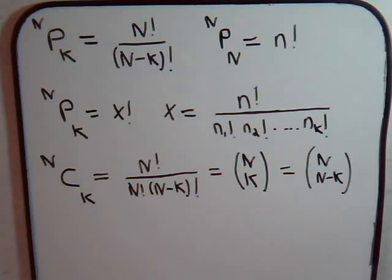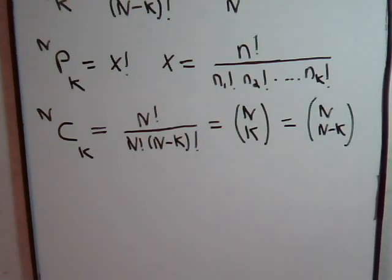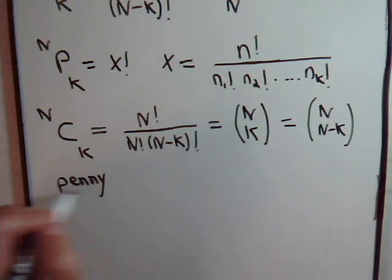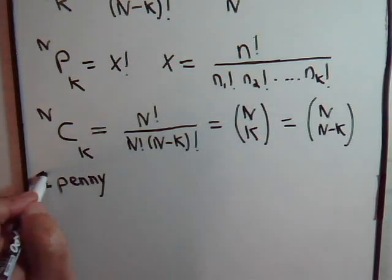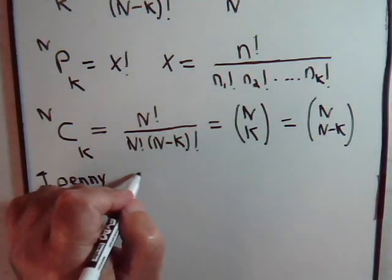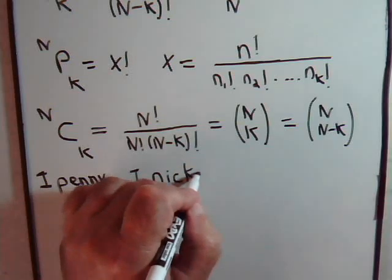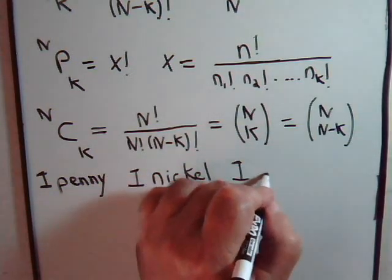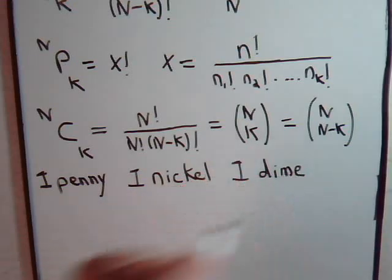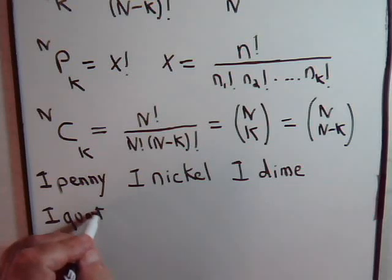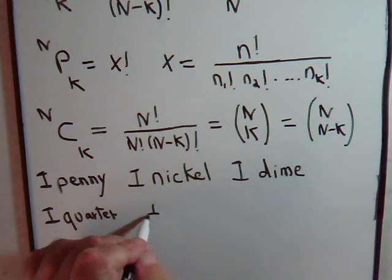So those are some of the things that we have dealt with along the way. Now we want to start with some combination problems. Here we have a pretty straightforward one to get us started. Let's say that a box contains a penny, one penny. We have a nickel. One dime. One quarter.